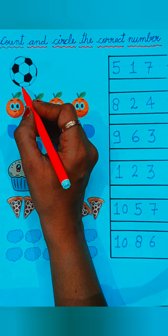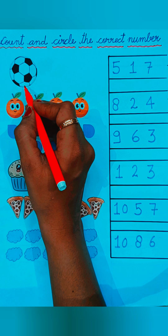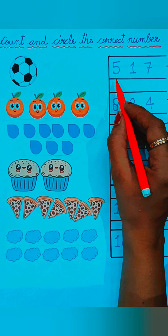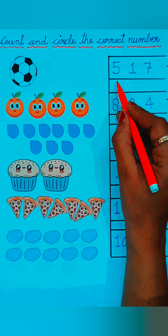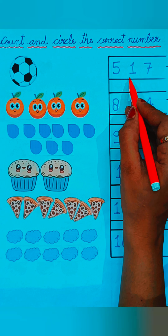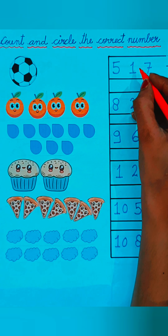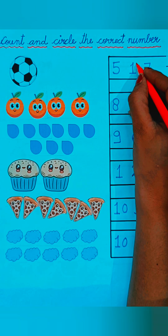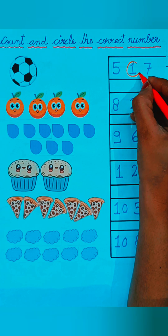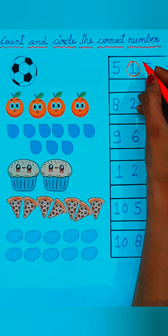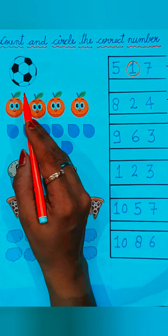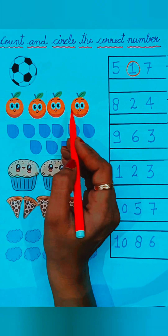How many footballs are given here? One football is given here, so we have to circle the correct number: one. Here three numbers are given — five, seven, and one — so we have to circle the number one.